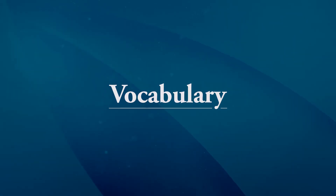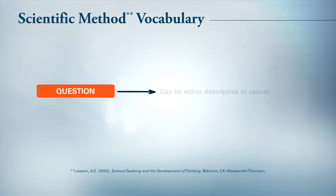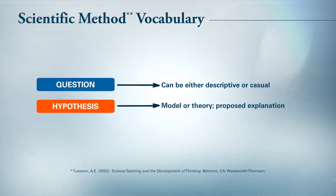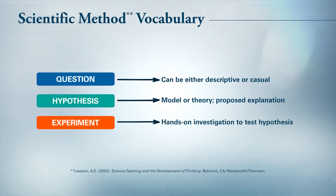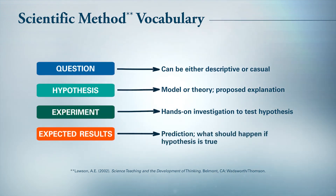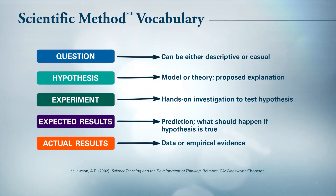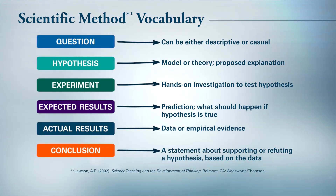Before you have your student scientists join us, let's review some key terms. Scientific questions usually ask for either a description of a phenomenon or a cause for it. A model is a question's proposed answer — it can also be called hypothesis or theory. Experiments give scientists chances to test their proposed answers, and it's always a great idea to figure out beforehand what should happen assuming one's proposed model works. Resulting data can be observations or numbers that scientists collect for measurements. And finally, conclusions result from a comparison between expected and actual results. A match means the model is supported, while a mismatch means the model is refuted and in need of revision.